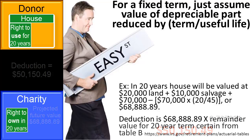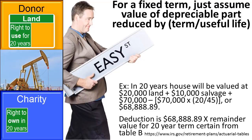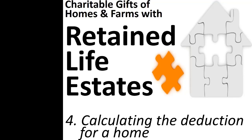Finally, if the value of the land may be reduced by depletion of its natural resources — for example, valuable mineral rights — the expected depletion must be taken into consideration in estimating the value of the charity's remainder interest, although no specific methodology is mandated. This has been Charitable Gifts of Homes and Farms with Retained Life Estates, Part 5: Rules After the Gift is Made.